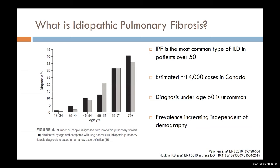IPF is actually the most common form of ILD, particularly in people over the age of 50. It's thought that there are about 14,000 patients in Canada who have IPF, and the diagnosis is pretty uncommon in people under 50. On this graph you can see the percentage of people in an ILD clinic who have IPF — as patients get older, the rates of IPF as a diagnosis go up substantially.